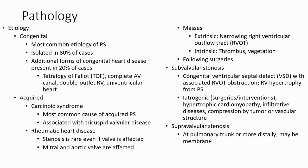Even if the valve is affected by rheumatic disease, the mitral and aortic valves are more commonly affected. Other causes include mass or extrinsic narrowing of the right ventricular outflow tract, intrinsic thrombus, post-surgical stenosis, and sub-valvular stenosis, which can be congenital or iatrogenic. Supra-valvular stenosis at the pulmonary trunk or more distally may be caused by a membrane.